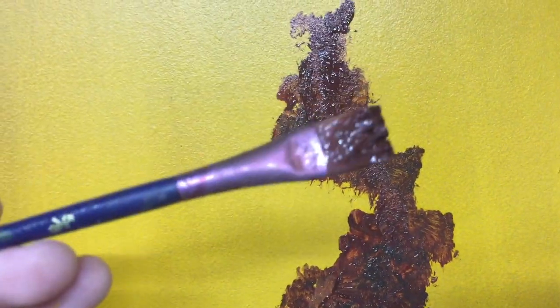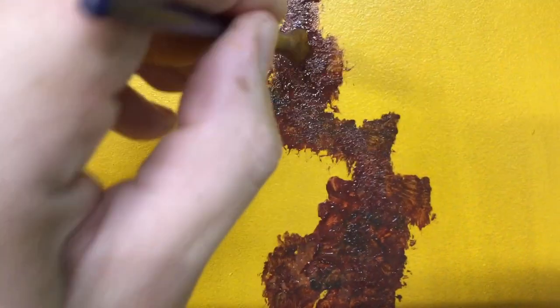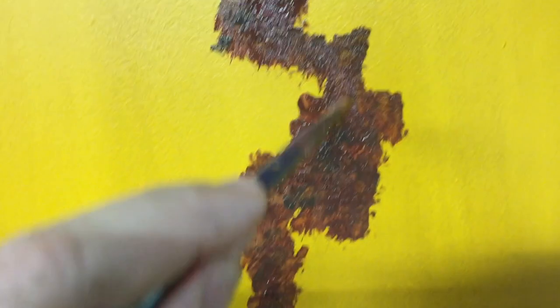I'm doing what's called stippling where you just take a brush, load it with paint, and you just dab it. I basically make areas that are wider where a lot more damage has happened, and then I have tapered off areas like this rust is kind of working its way down.